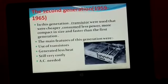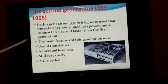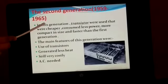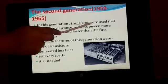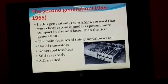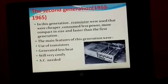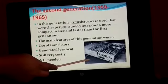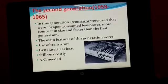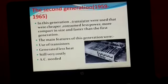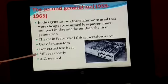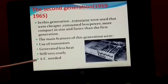Second generation. The time of the second generation is 1959 to 1965. In this generation, transistors were used. They were cheaper, consumed less power, more compact in size, and faster than the first generation. You can see in this image — this is the image of a transistor. The main features of this generation were use of transistor, generated less heat, still very costly, and AC was also needed.